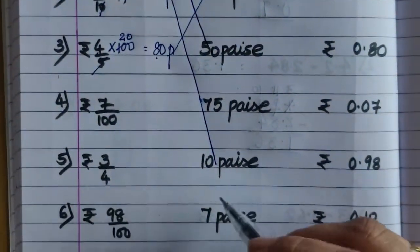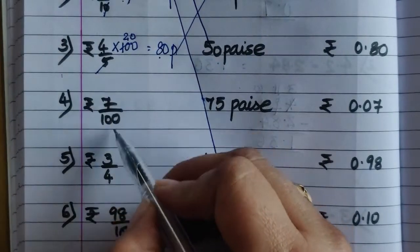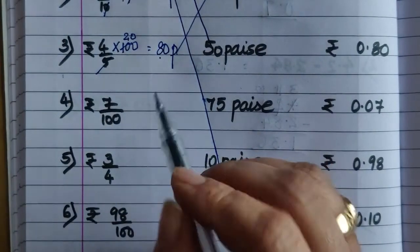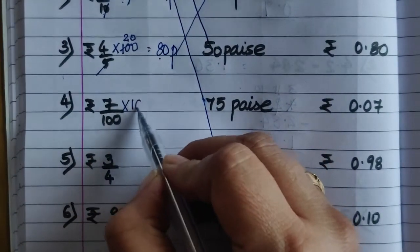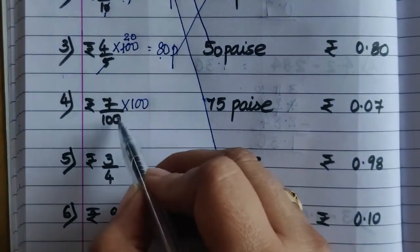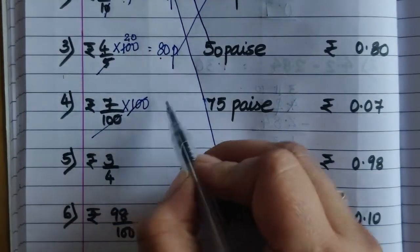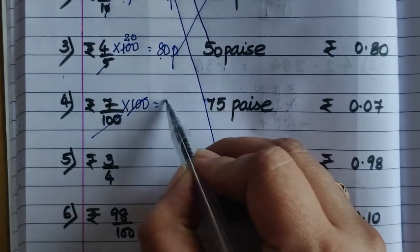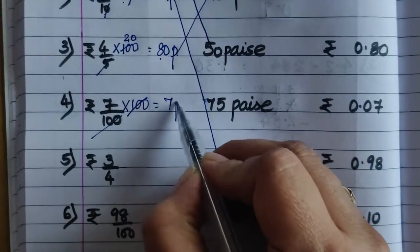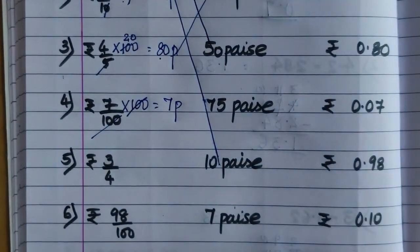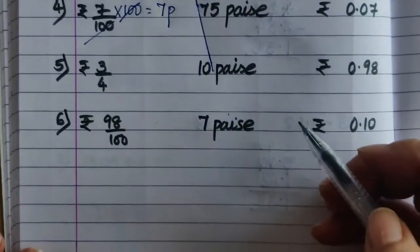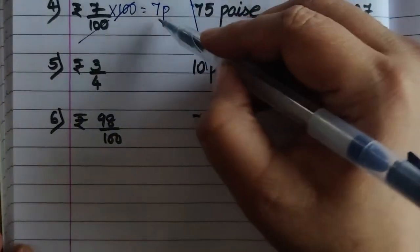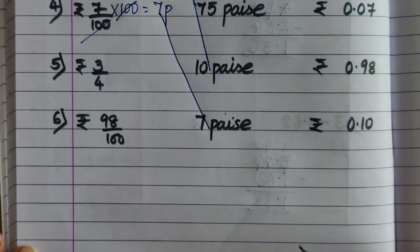Next is 7 by 100 — तो यहाँ पर again 100 multiply करेंगे: 100 और 100 cut, तो यहाँ पर मिल गया हमें only 7 पैसा. 7 पैसा को 7 पैसा से यहाँ पर match करेंगे.